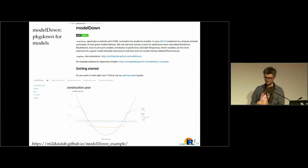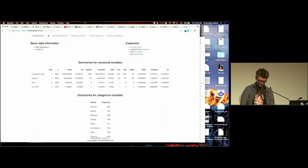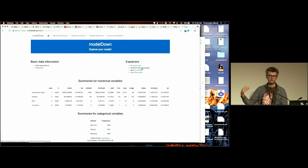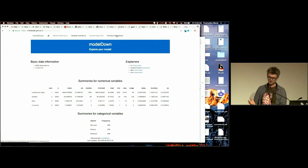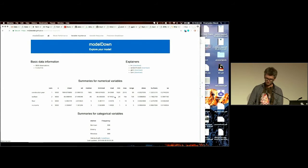The last thing I'm going to show is a use case called modelDown. Maybe some of you know the packagedown package — you can take any package and create a website for it. Here the idea is you can create a website for your model or a collection of models. You simply take a model, use the modelDown package, and you get a website with links to your model where you can download it as a binary object, go through different tabs with different explainers. Everything is stored as a static website so you can explore these models.